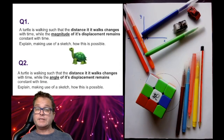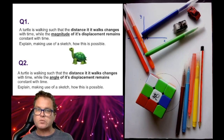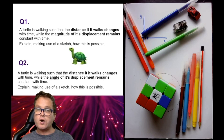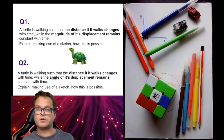We now look at two problems to test your understanding. Question two says a turtle is walking such that the distance it walks changes with time, while the angle of its displacement remains constant with time. You're asked to explain, making use of a sketch, how this is possible. Please take out a piece of paper, pause the video, and give this a try.